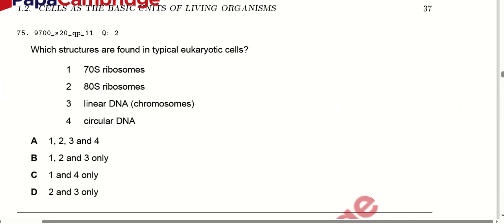Which structures are found in typical eukaryotic cells? 70S ribosomes are present in mitochondria. All ribosomes present in the cytoplasm are 80S. Linear DNA chromosomes are present in the nucleus. Circular DNA can be present in mitochondria. All the options connect, so option E is correct.